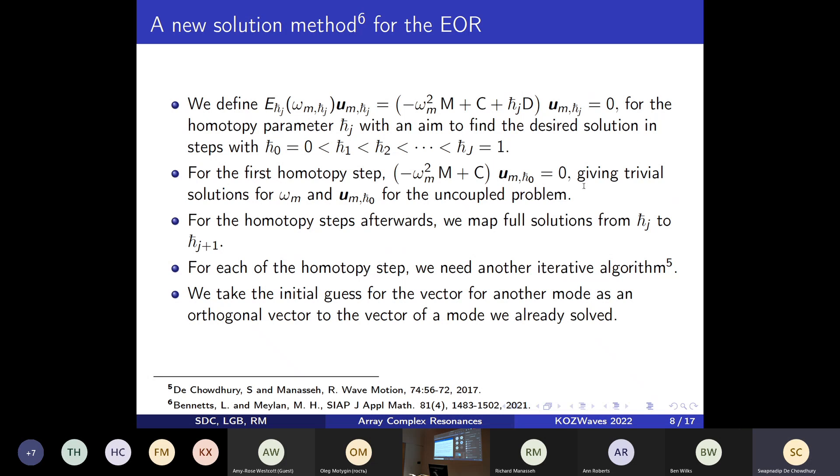For each of the homotopy steps, for a given value of the homotopy parameter, we can adopt an earlier method that we used a couple of years ago to find the full solution of the complex eigenvalue problem. The switching for the modes from one mode to another is fully determined by the choice of the initial guess we make for the complex eigenvector h_j. There we take a vector orthogonal to the final solution of the eigenvector when going from one mode to another. In summary, we have an inner iterative process to solve for the complex eigenvalue problem for a given homotopy parameter h-bar, and then we find the final solution in a certain number of homotopy steps.